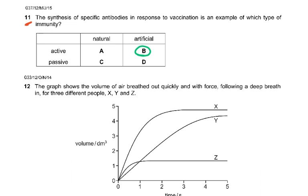Question 11: the synthesis of specific antibodies in response to vaccination is an example of which type of immunity? Remember, in passive immunity it's ready-made antibodies. In natural active immunity, you get the pathogen, suffer from the disease, are sick for 10–15 days, and then develop plasma B cells and memory cells. But the synthesis of specific antibodies in response to vaccination is an example of artificial active immunity.